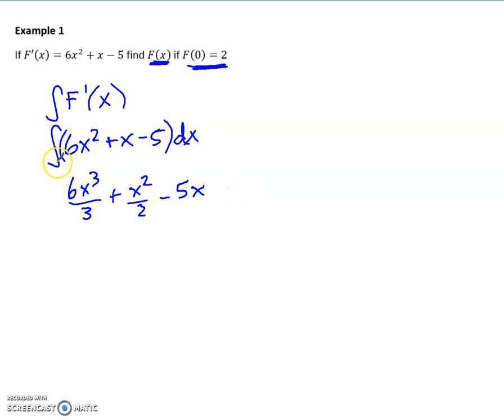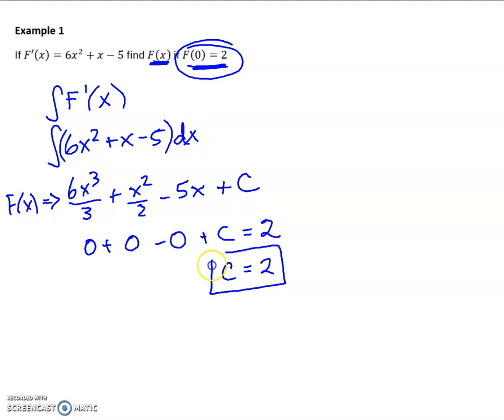But because this is indefinite, we are going to add that c value. And so this is where this information comes into play, because this information says, remember, this is now f. We've done the antiderivative. So this says if I plug in 0 to this original function for x, I should get out 2. Well, you can see if I plug in a 0, I get 0, 0, 0, plus c, but that's supposed to come out to 2. So that means we know that our constant would have to be 2.